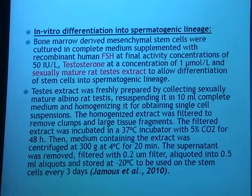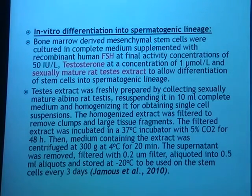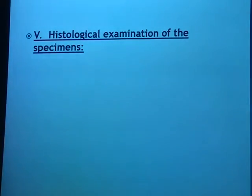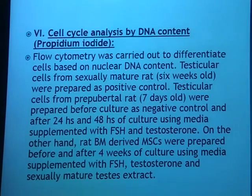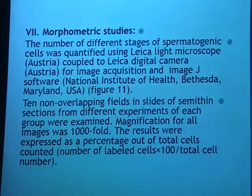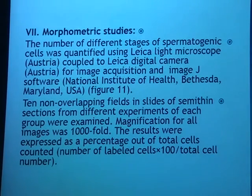We then performed the in vitro trans-differentiation into spermatogenic lineage using recombinant FSH at a concentration of 50 international units per liter, testosterone at a concentration of 1 micromole per liter, and sexually mature rat testis extract to allow the differentiation of stem cells into spermatogenic lineage. We then performed histological examination, cell cycle analysis by DNA content, and a morphometric study enumerating the different stages of spermatogenic cells using the Leica-Lite microscope with software.